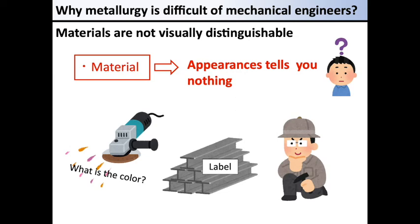In the case of steel materials, a grinder may be used to determine the composition of the carbon content and other components from the color and brightness of the sparks. It may be difficult for you to have a clear image, so we should note the difficulties caused by the fact that the material properties are invisible. Based on this, you should not too much stick on the details of metallurgy, but you should try to pick up knowledge useful for practical works in machine design.